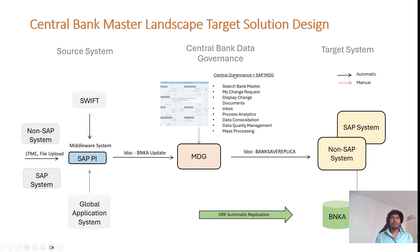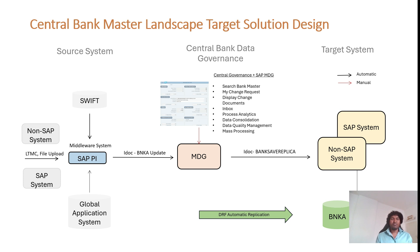The target solution is to centralize the bank master data in the MDG system. You can decide whether to maintain the bank master through the MDG change request process or without it. It is purely a business requirement decision. If you don't use the MDG change request process, SAP provides standard Fiori apps to maintain the bank master data manually, giving end users access to update the data. You need to analyze whether the benefit of using MDG is really demanded by the customer, since implementation effort is higher with MDG.